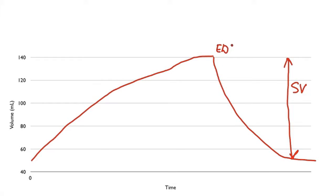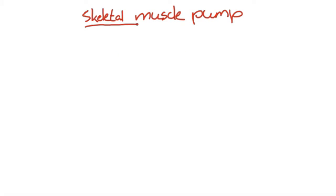Another way of increasing the end diastolic volume is by causing more blood to be sent back to the heart. Now how do we do that? Well, there are a number of mechanisms. The way I want to talk about is called the skeletal muscle pump.